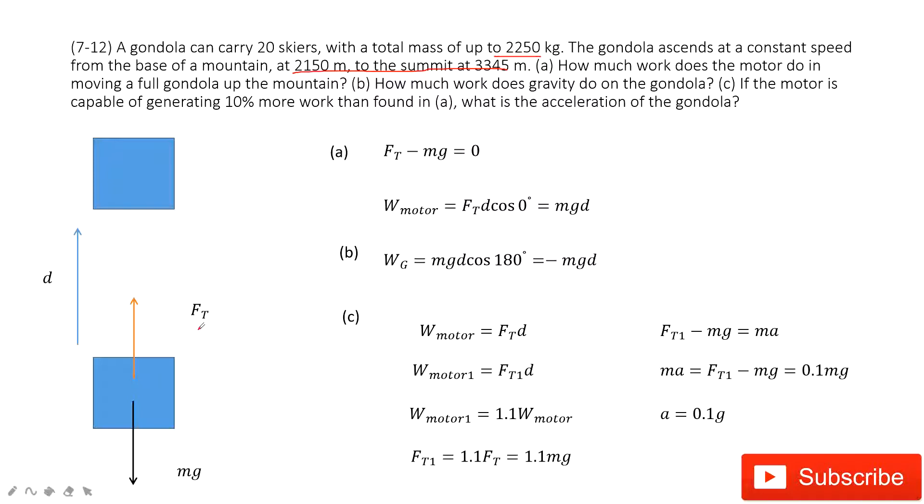Now, can we find this tension? Sure, because they tell us it moves at a constant speed. What does that mean? It means acceleration is zero. So we apply Newton's second law. So this Ft minus gravity equals zero, mass times acceleration. Acceleration is zero. So the force by the motor just equals gravity, mg.